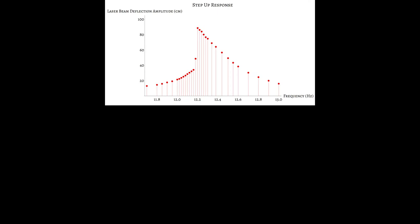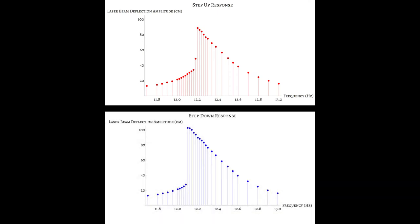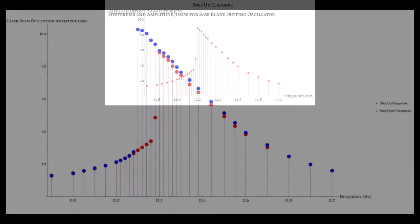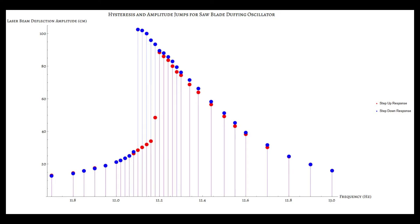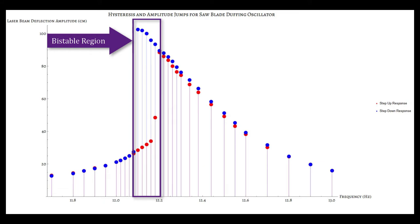Pictured at the top of the screen is the step-up amplitude response of the system, however, using a slightly different beam, hence the different resonant frequency. Pictured at the bottom now is the step-down response of that same system. Plotting the two together, we see hysteresis and amplitude jumps. Note the bistable region indicative of hysteresis in the system. Additionally, note frequency A, where the amplitude jump on the step-up response occurs, as well as frequency B, where the amplitude jump on the step-down response occurs.